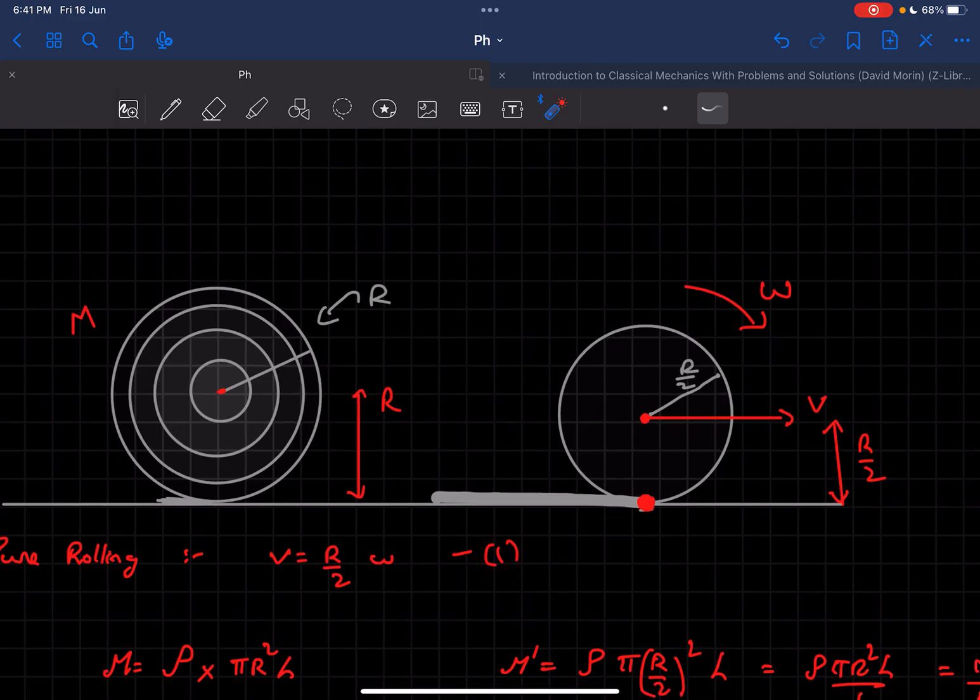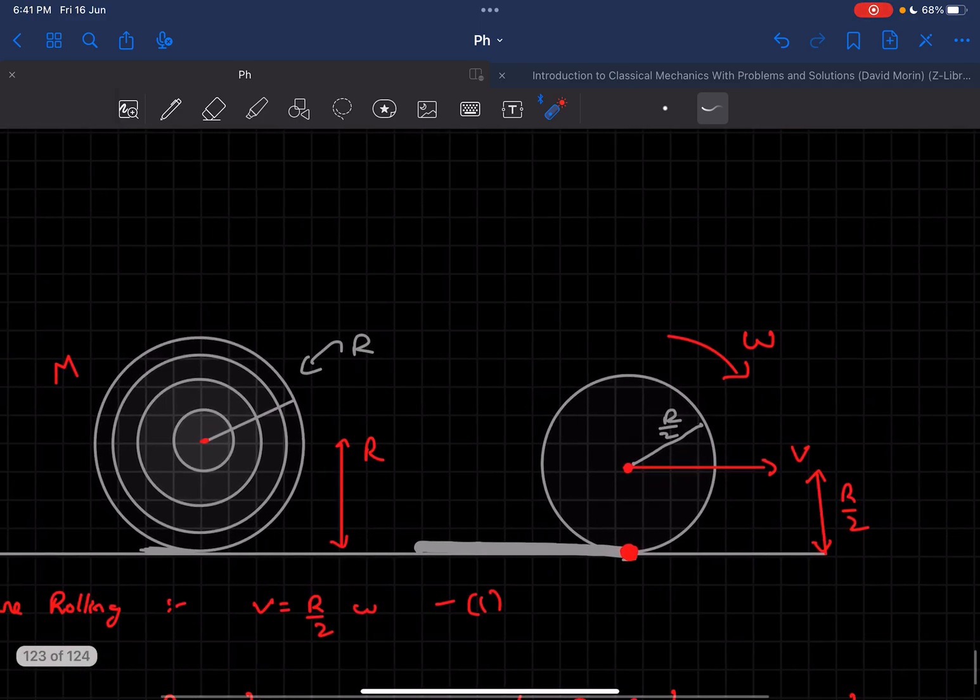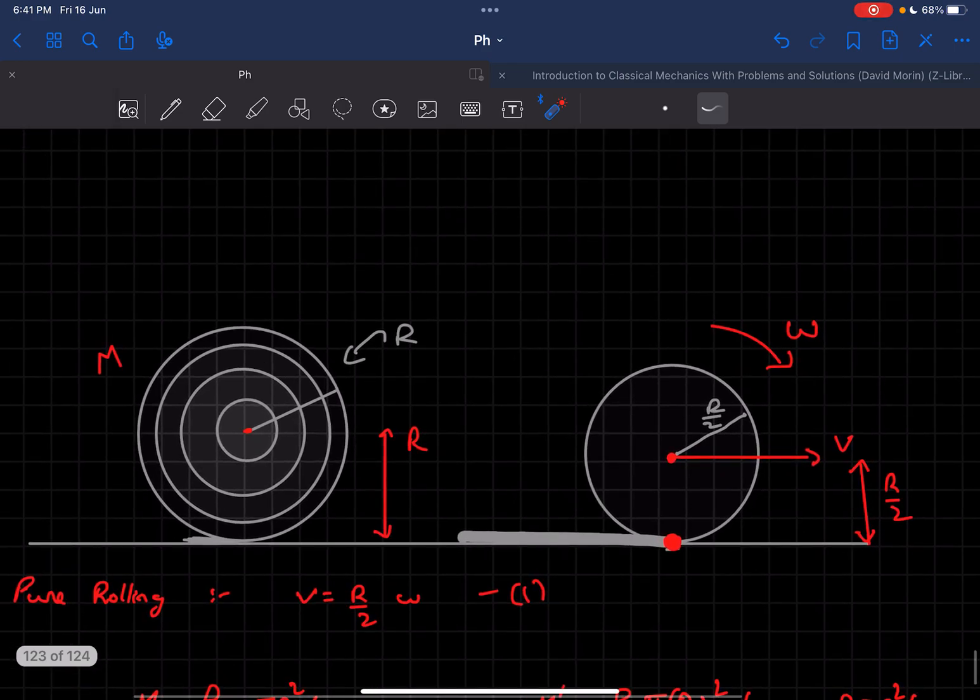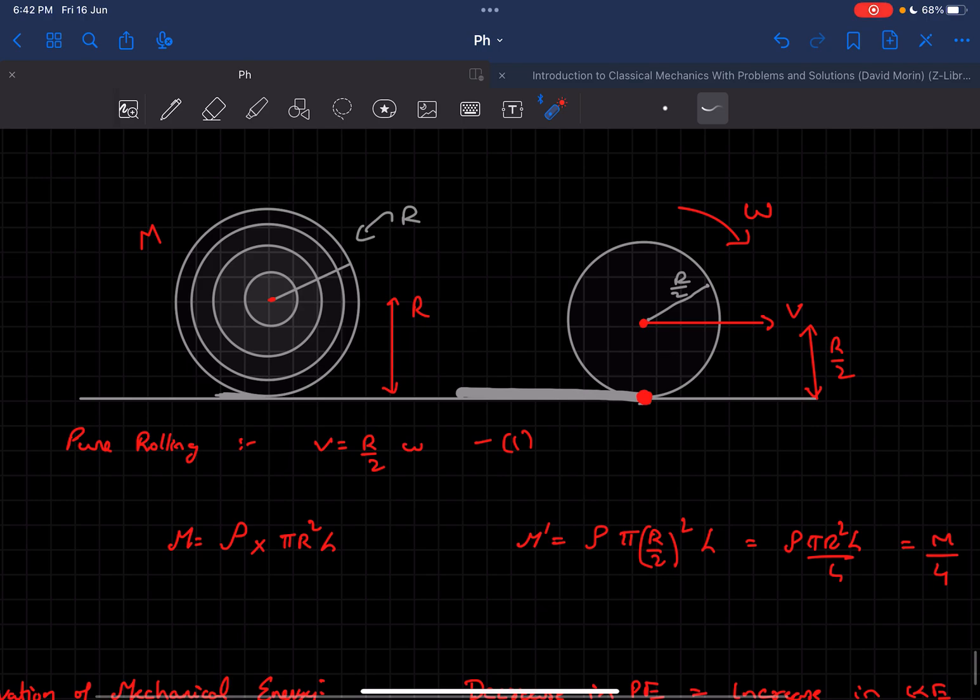The second key factor in this question is the mass of this cylinder is decreasing because the carpet is being unrolled. Initially, let's say the mass was m. We can write the mass m as the density times the volume. As this is a cylinder, the volume would be πr²l.